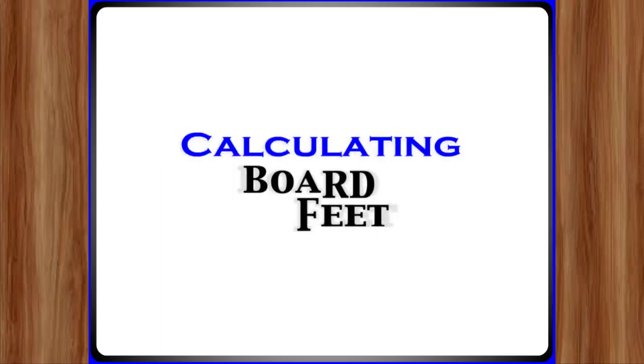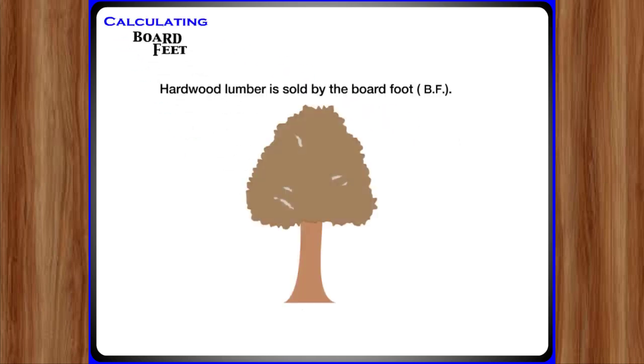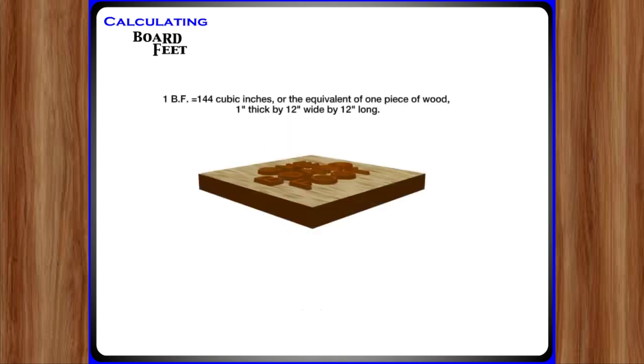Welcome to calculating board feet. Hardwood lumber is sold by the board foot. One board foot equals 144 cubic inches or the equivalent of one piece of wood one inch thick by 12 inches wide by 12 inches long.